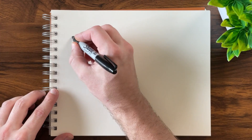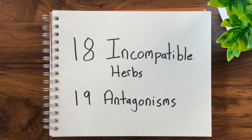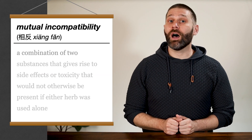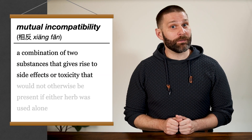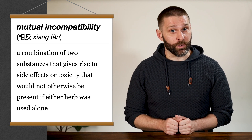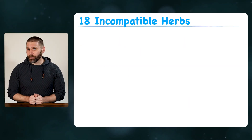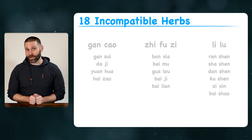These are also referred to as the 18 incompatible herbs and the 19 antagonisms. When we talk about mutual incompatibility, this refers to a combination of two substances that gives rise to side effects or toxicity that would not otherwise be present if either herb was used alone. It's kind of like the whole is greater than the sum of its parts, but in a bad, toxic way. We call this the 18 incompatible herbs, but it really refers to three groups of incompatibilities that add up to 18.